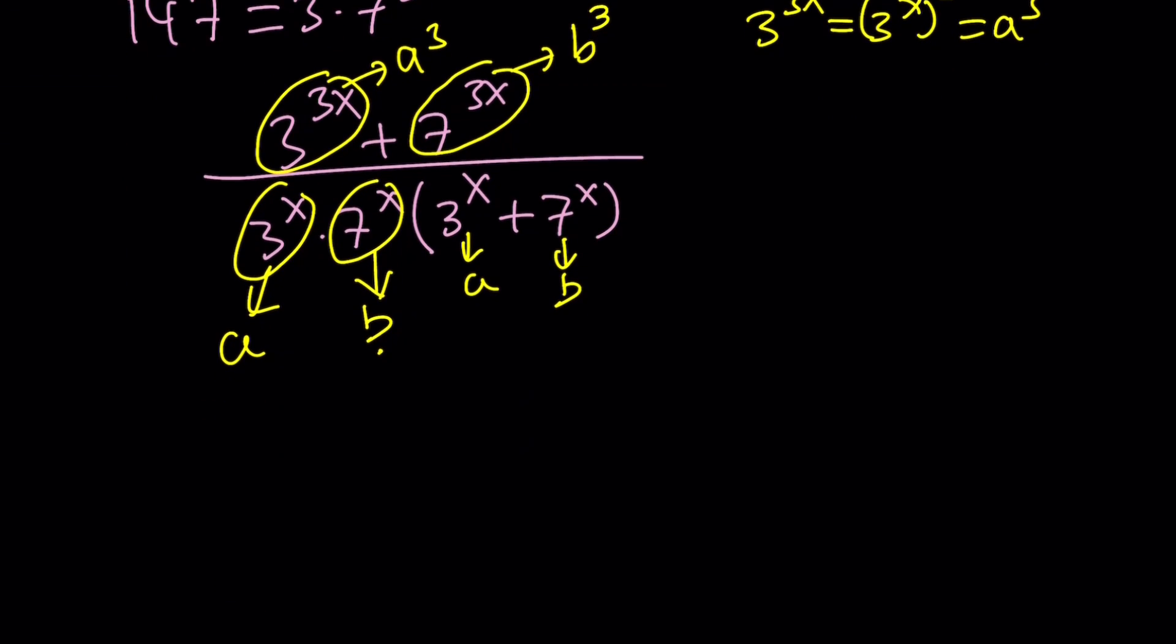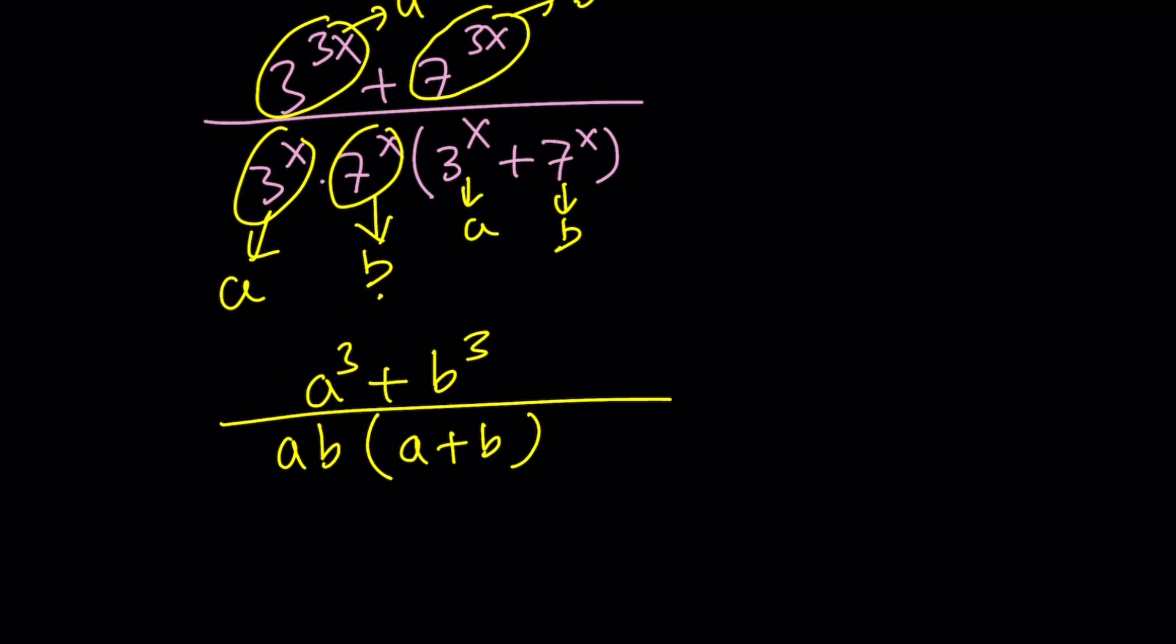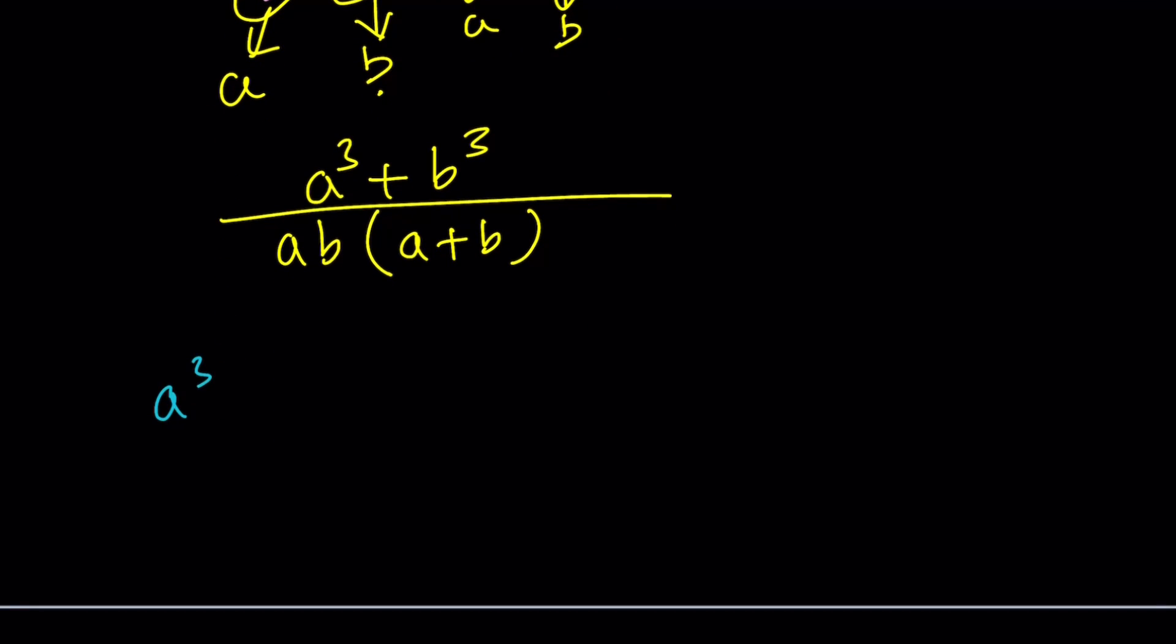Let's go ahead and do the replacements. a^3 + b^3, which you should recognize as sum of two cubes. There is a formula for sum of two cubes: a^3 + b^3 can be factored as (a + b)(a^2 - ab + b^2).